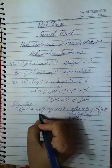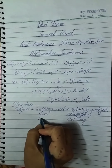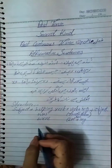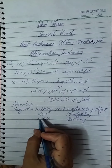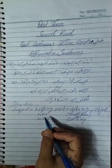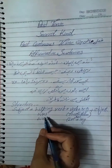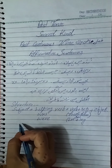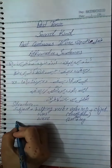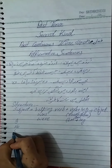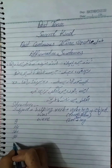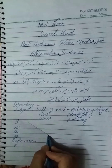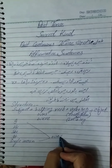The helping verbs used in past continuous tense are 'was' and 'were'. This tense is similar to present continuous where we used is/am/are. Here, 'was' is used for: I, he, she, it, and singular nouns — these subjects take 'was' plus the verb with 'ing'.